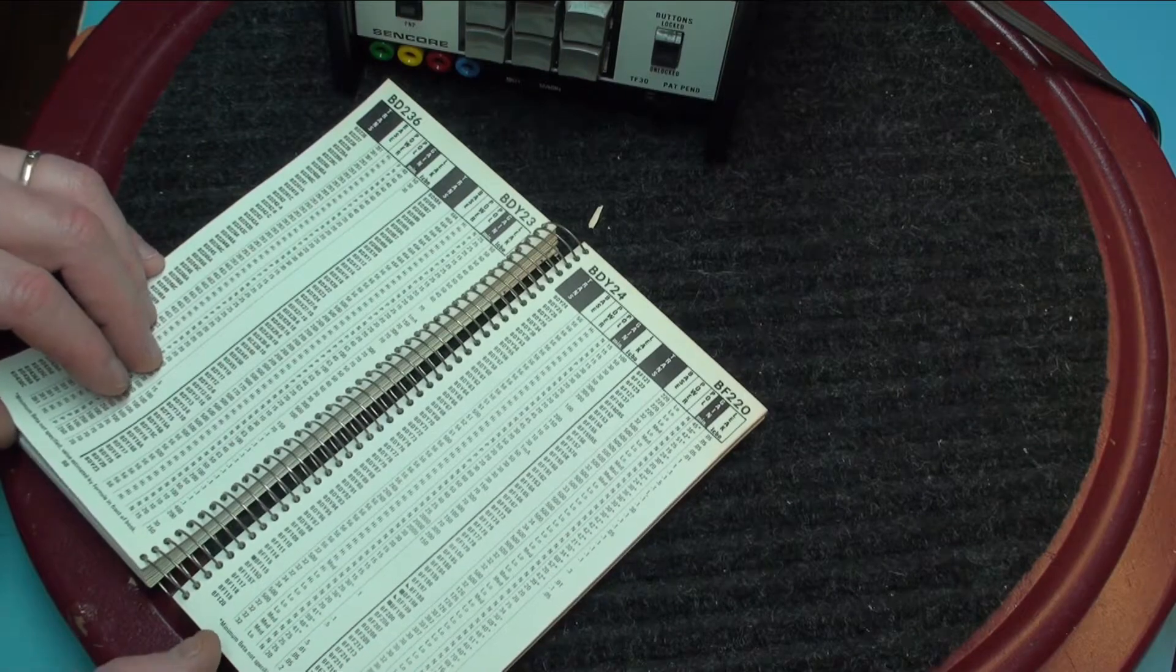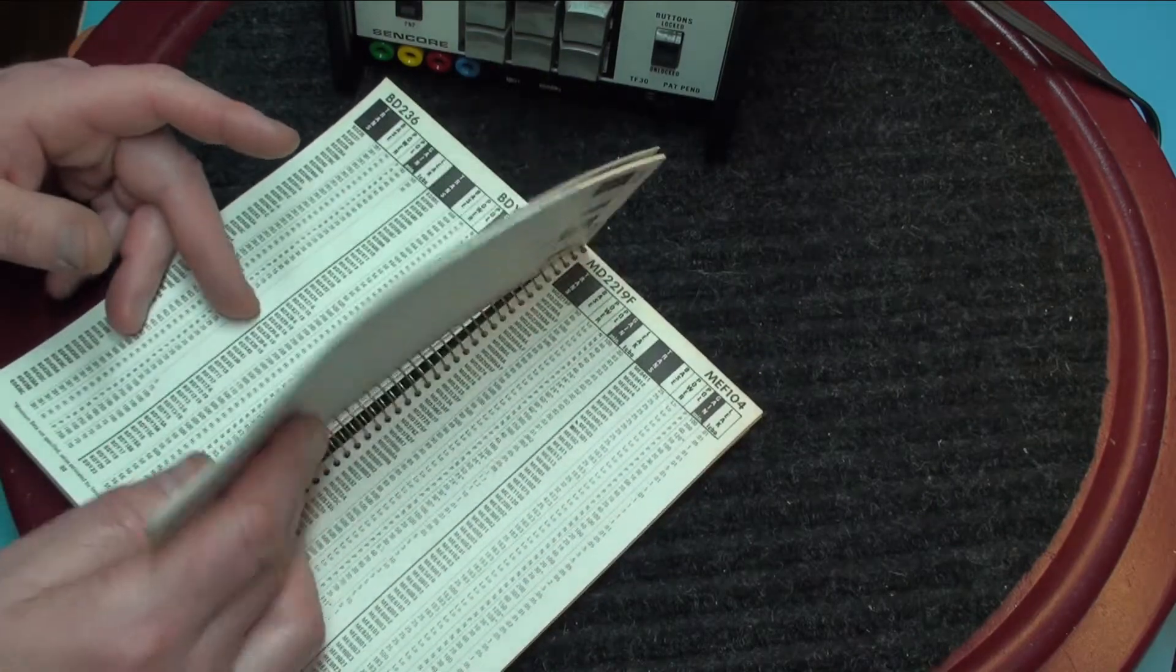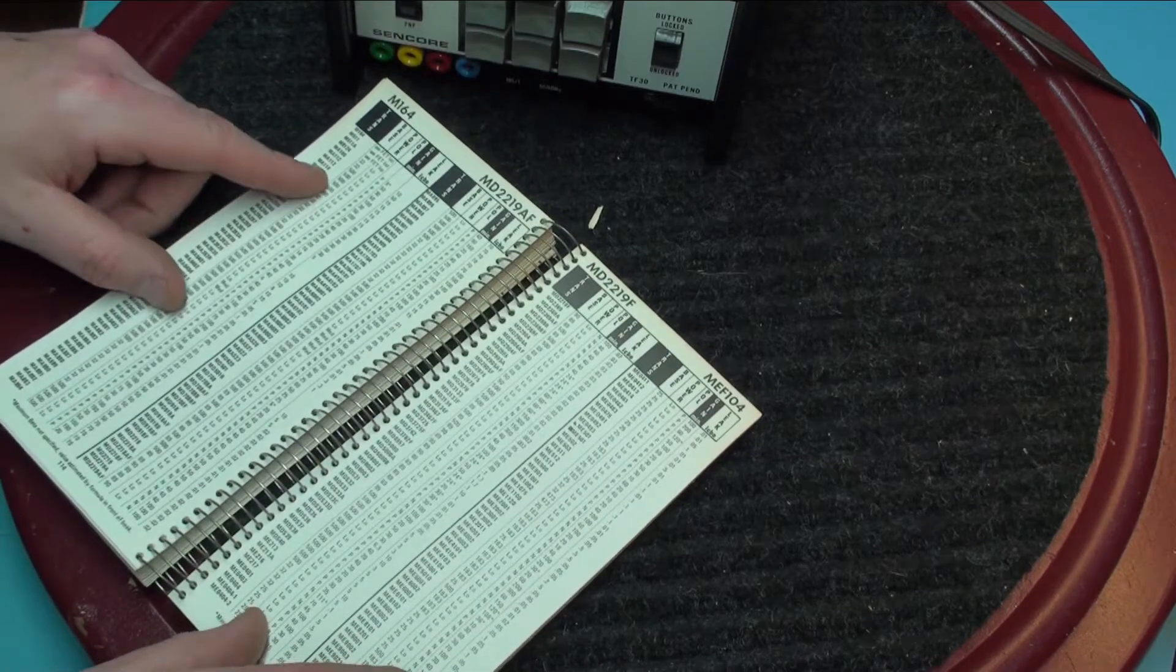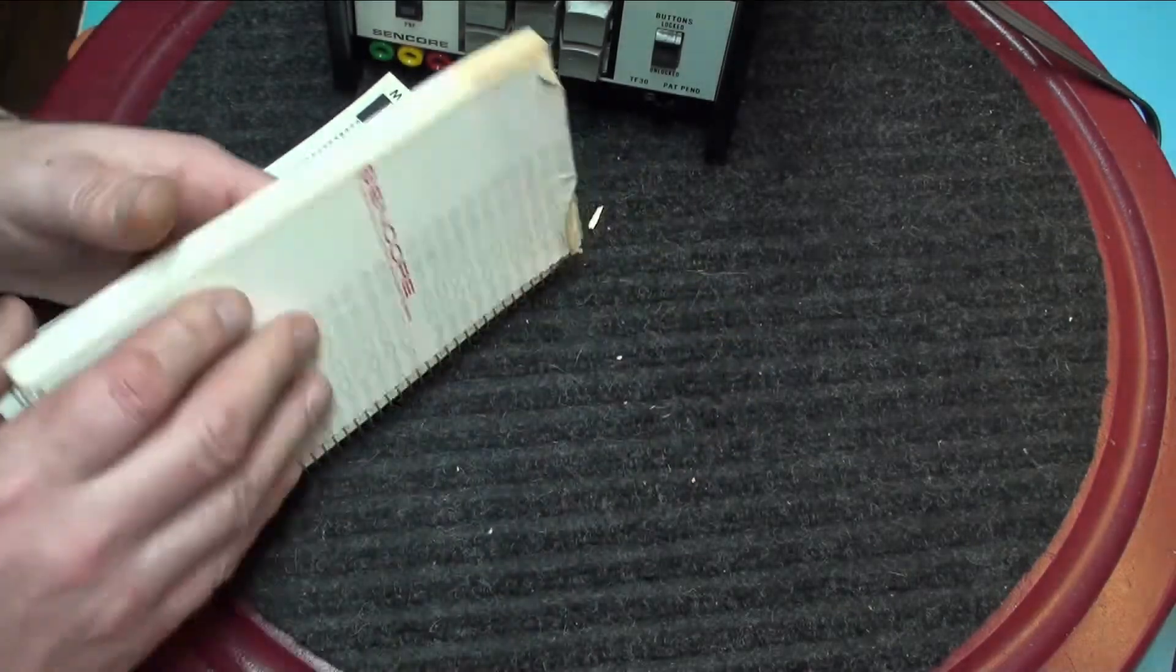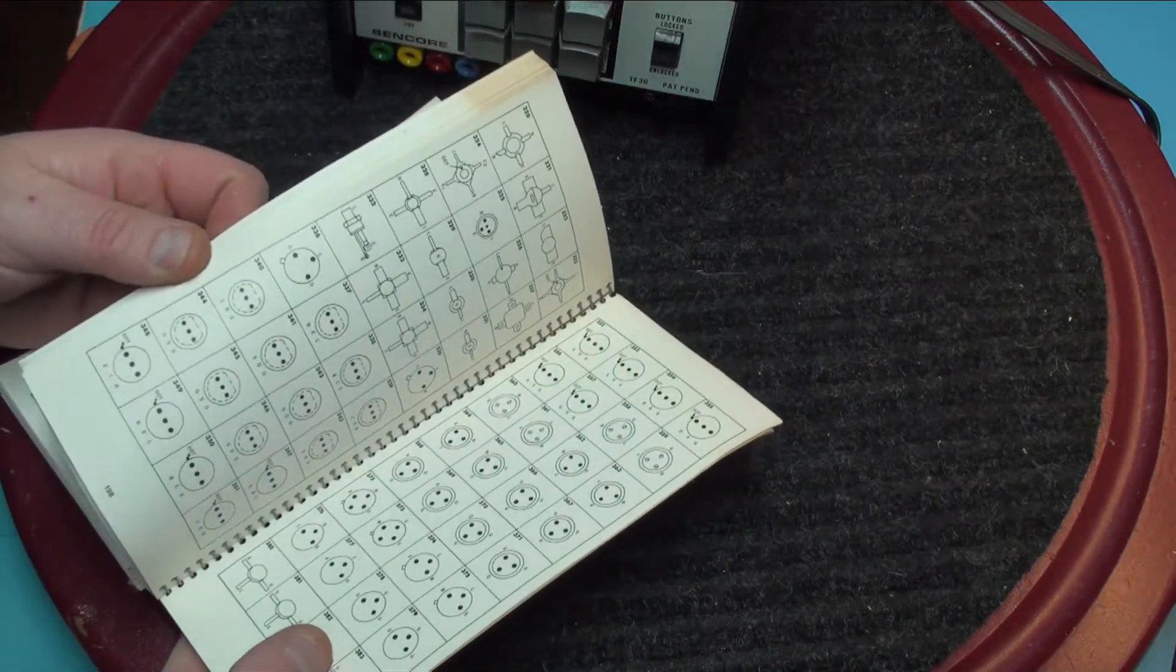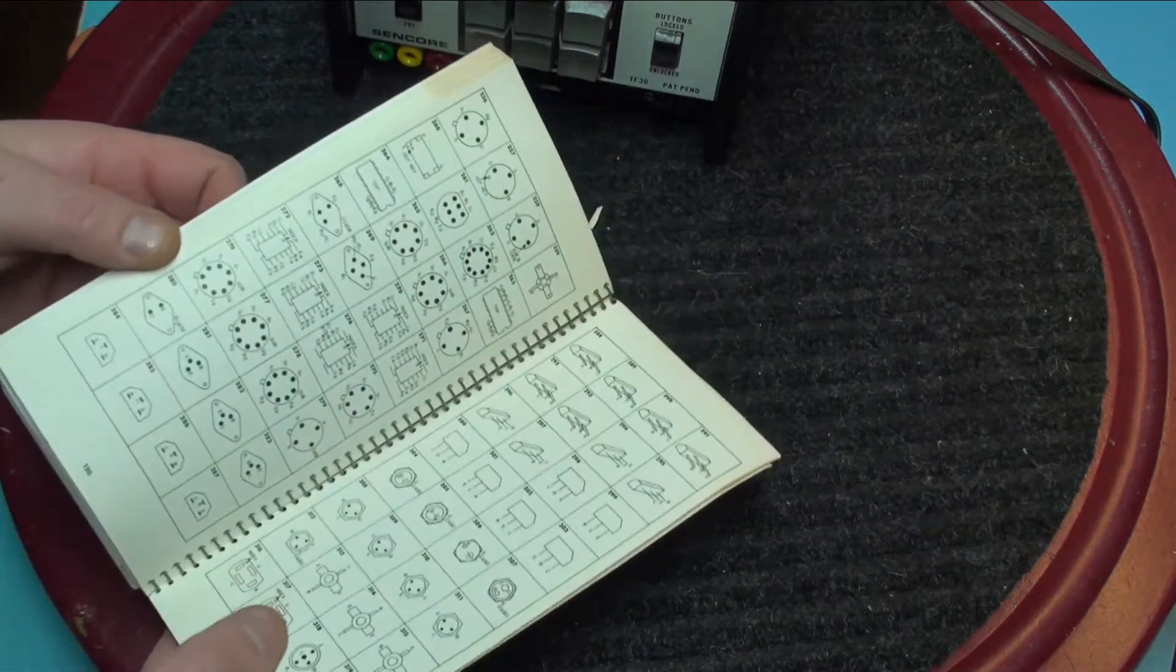It basically lists all the different transistors and FETs by part numbers. It identifies the base, which reflects back to base charts in the back for all different types of transistors.